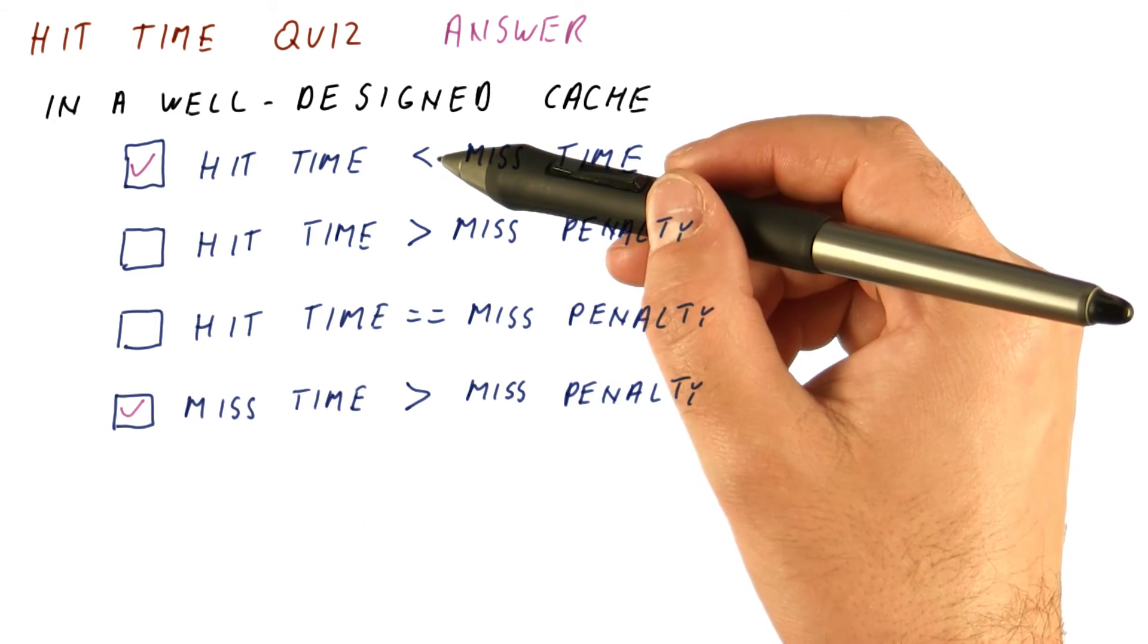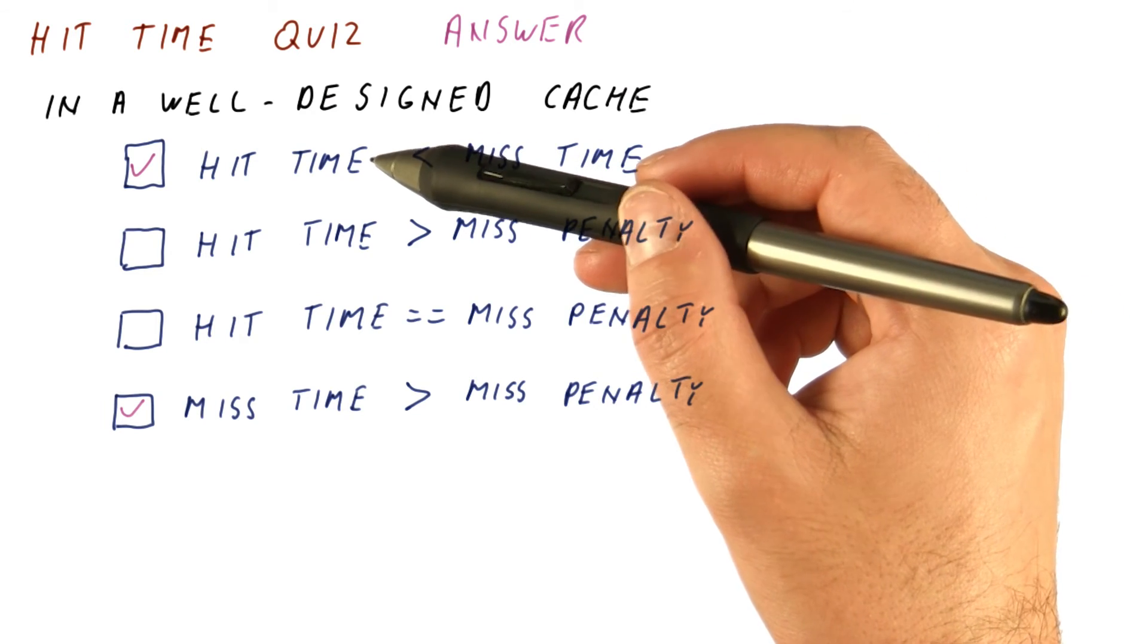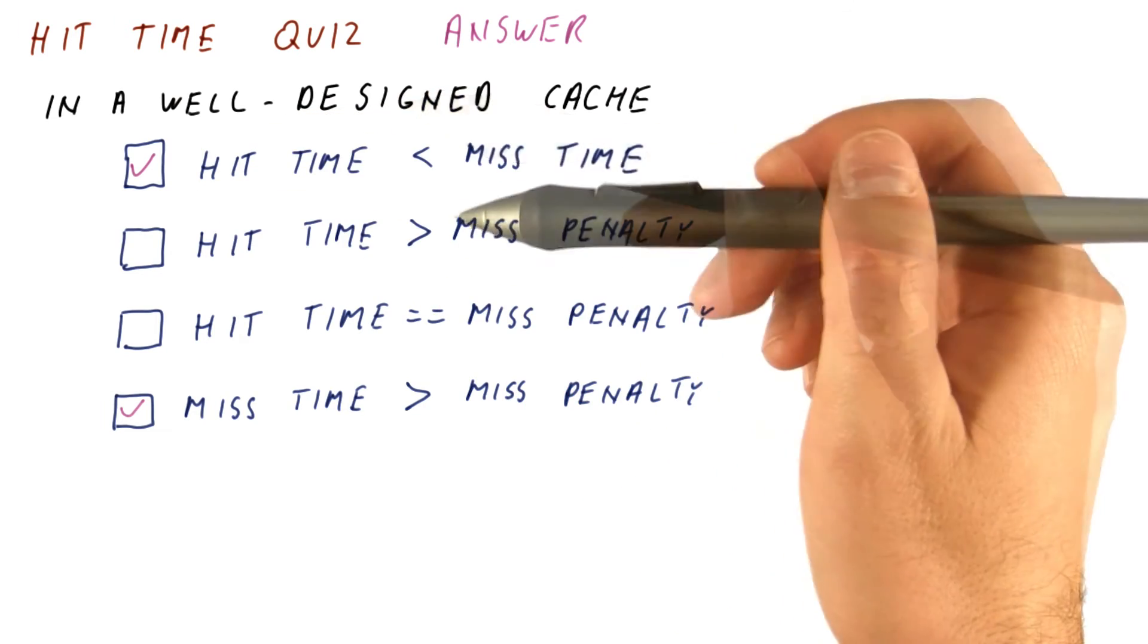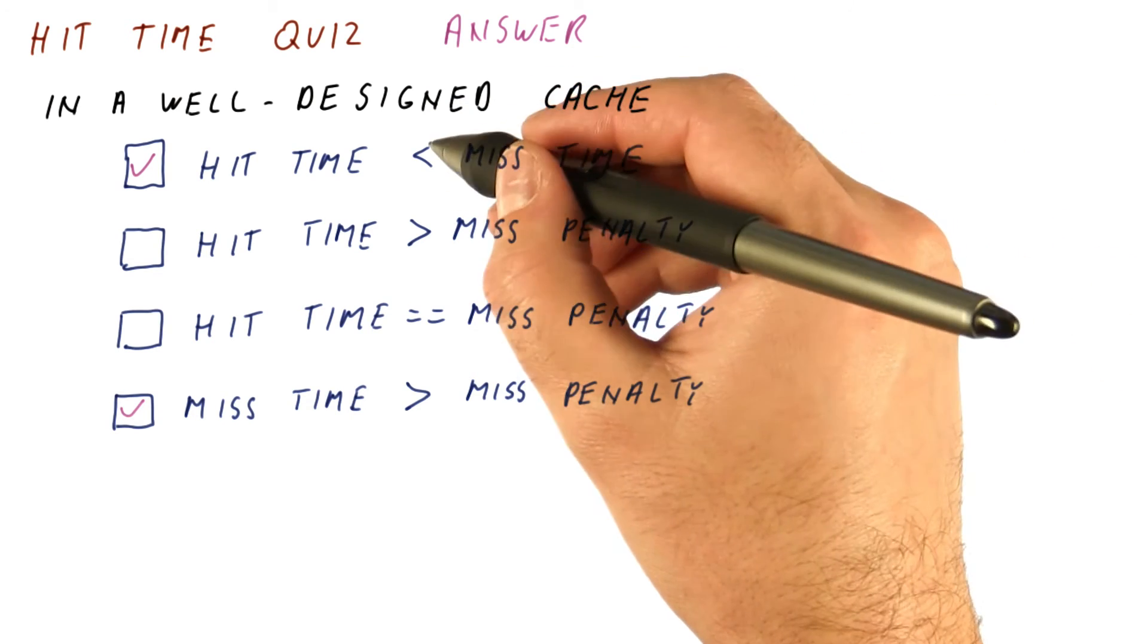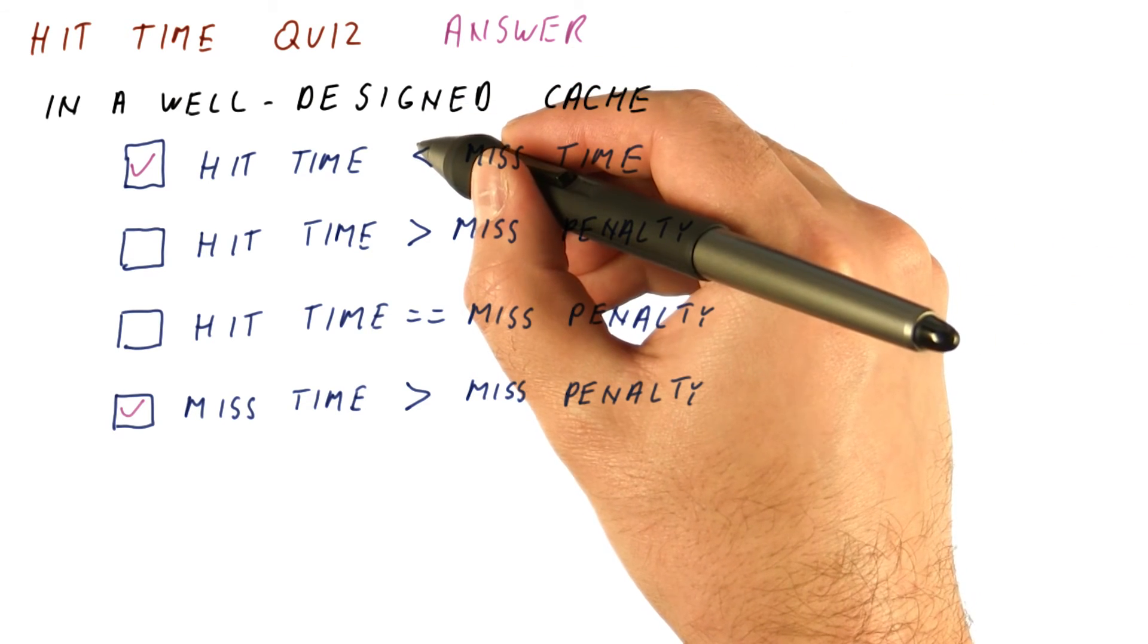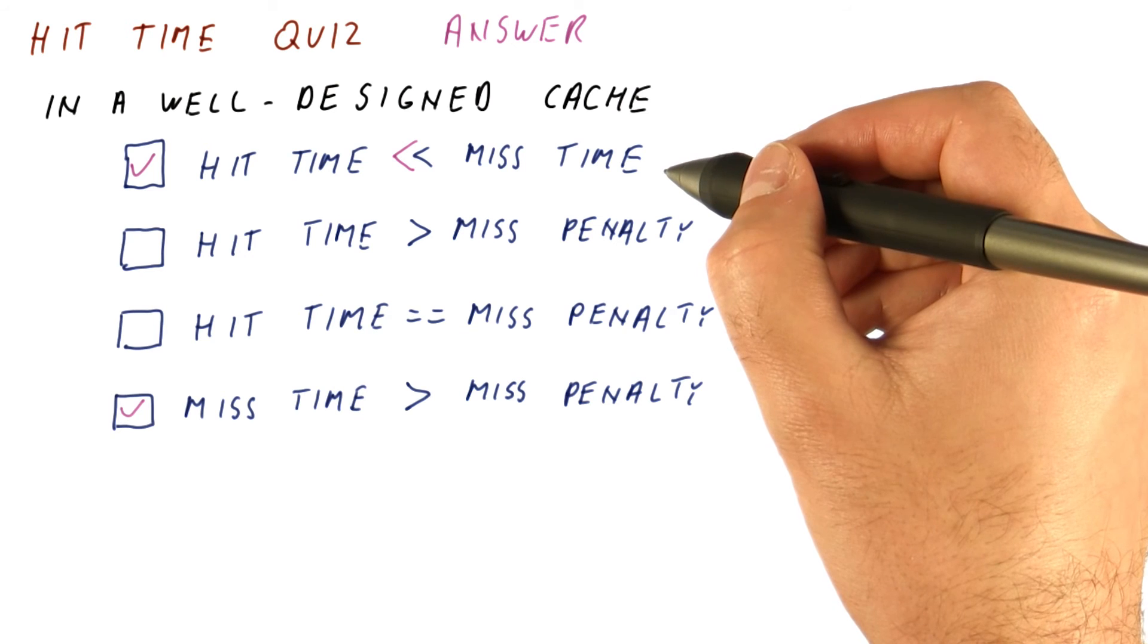As we can see, for a cache to be beneficial, it needs to have a low hit time. In fact, in a well-designed cache, we can say that the hit time is much less than miss time.